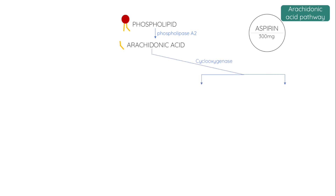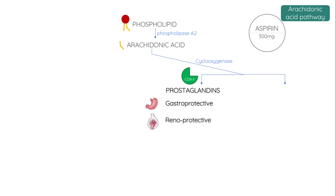There are two main splice variants of this enzyme. Cyclooxygenase 1 is responsible for producing prostaglandins that help to maintain the gastric mucosa by stimulating mucus production, and by helping to maintain renal perfusion. COX-1 also produces thromboxane A2,